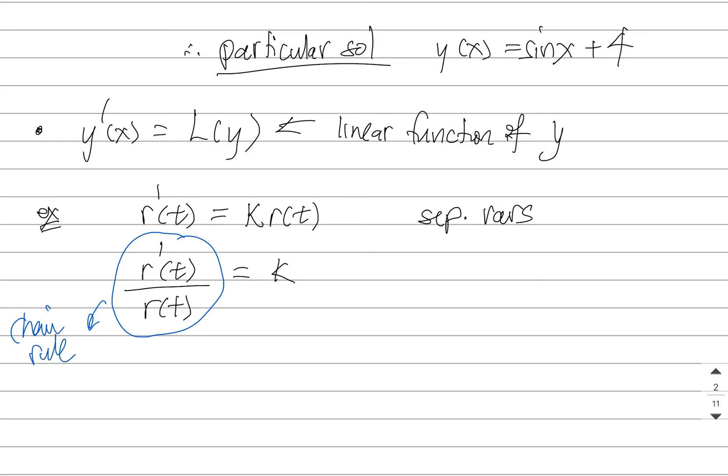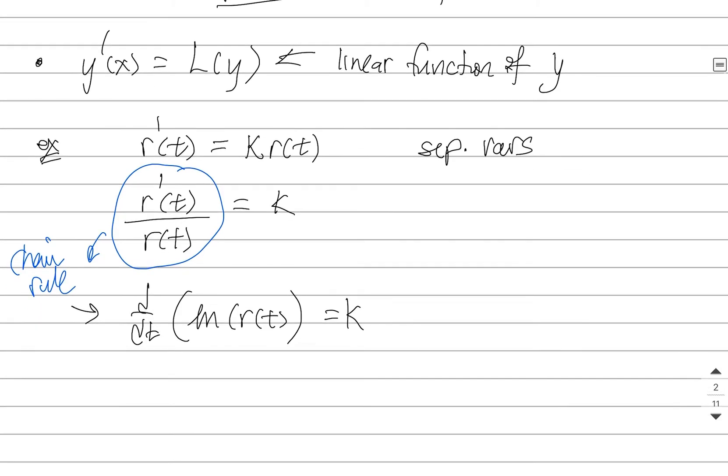From the chain rule, this thing right here is the derivative of the natural log of r(t). Oh, that was so lucky! Because now, this is a problem we can solve like we did above. We just take an antiderivative of both sides. So we anti-differentiate this. We'll get kt + C.